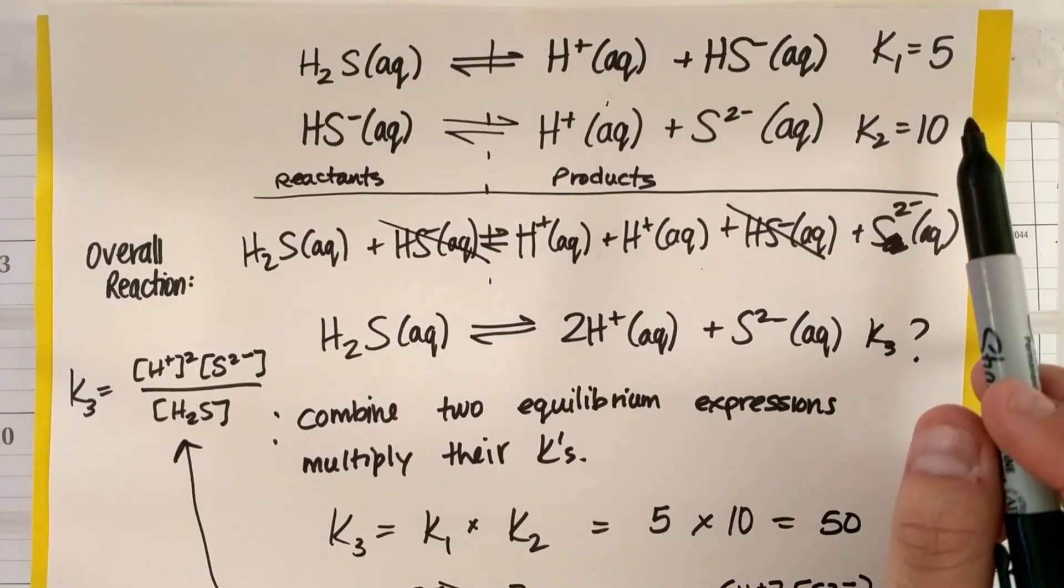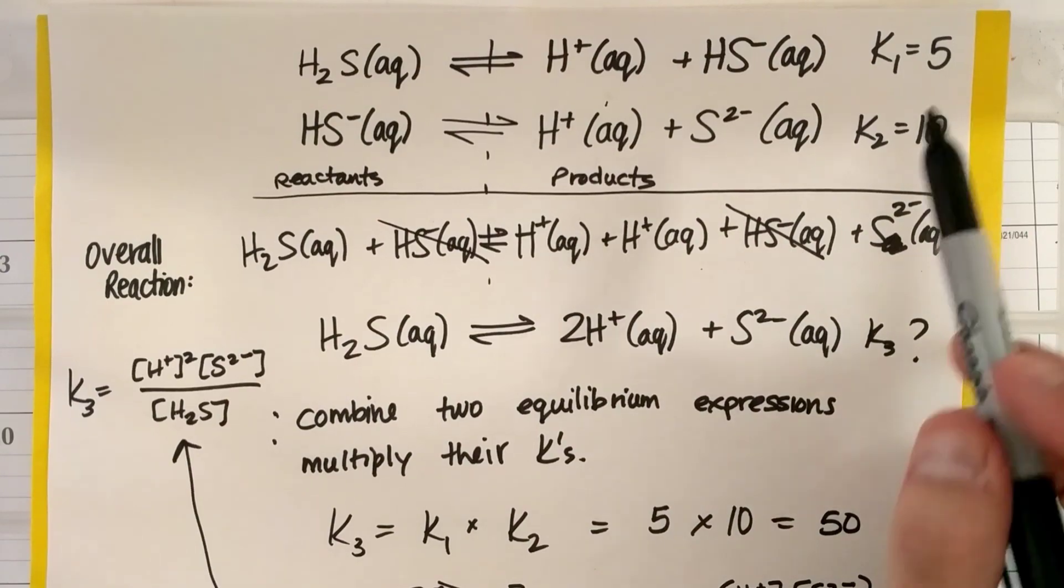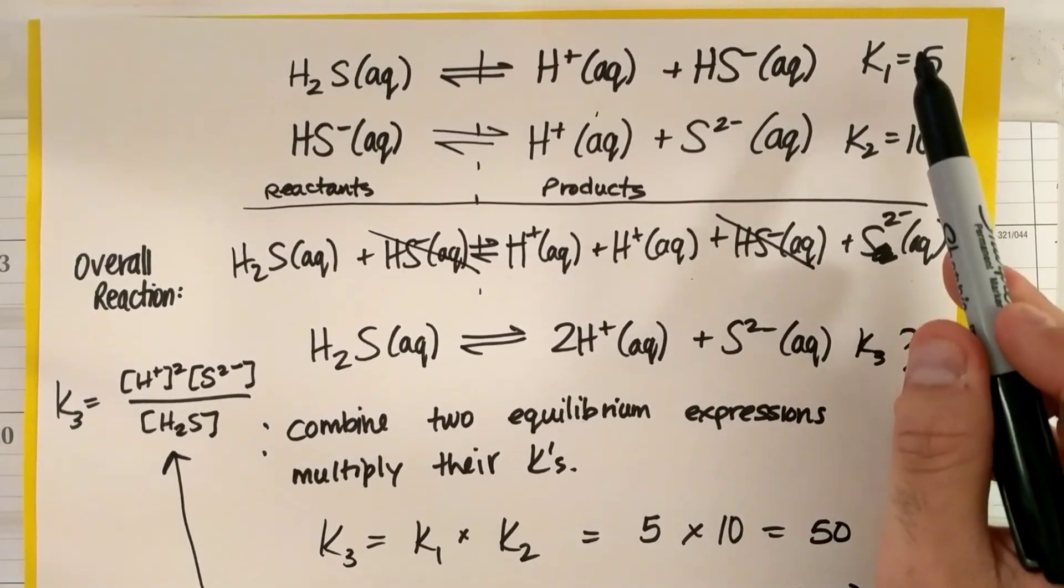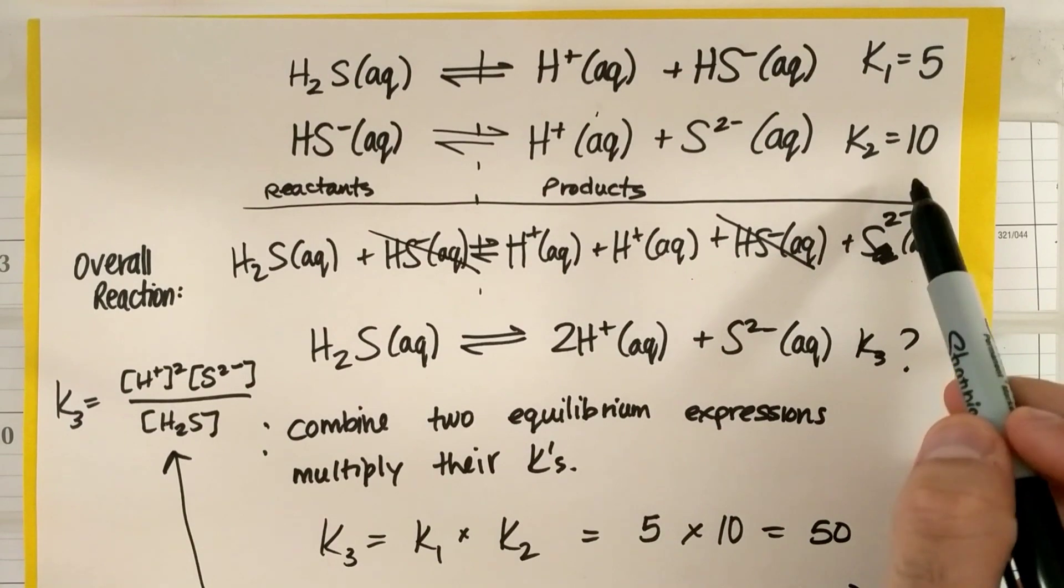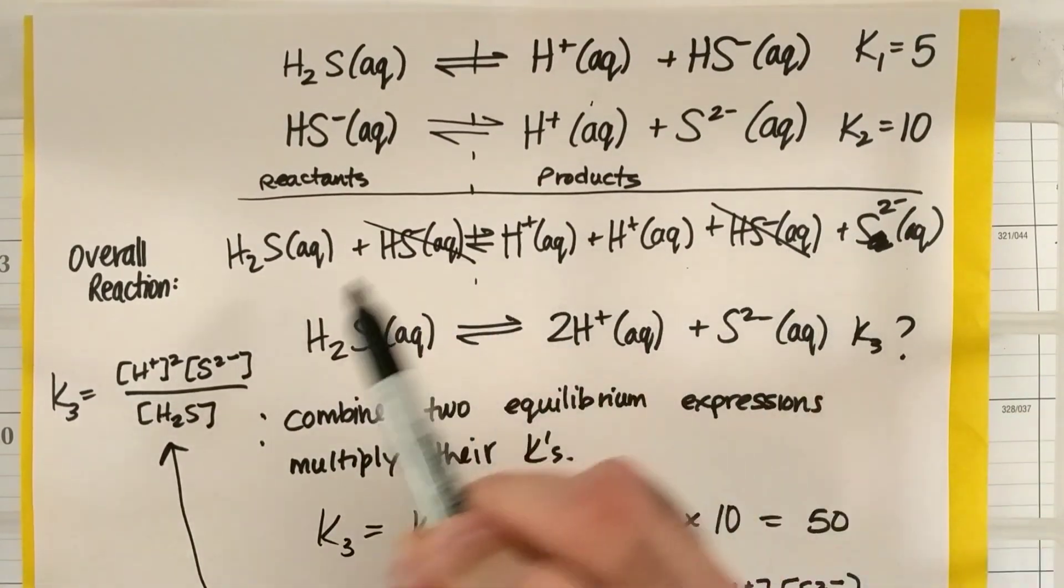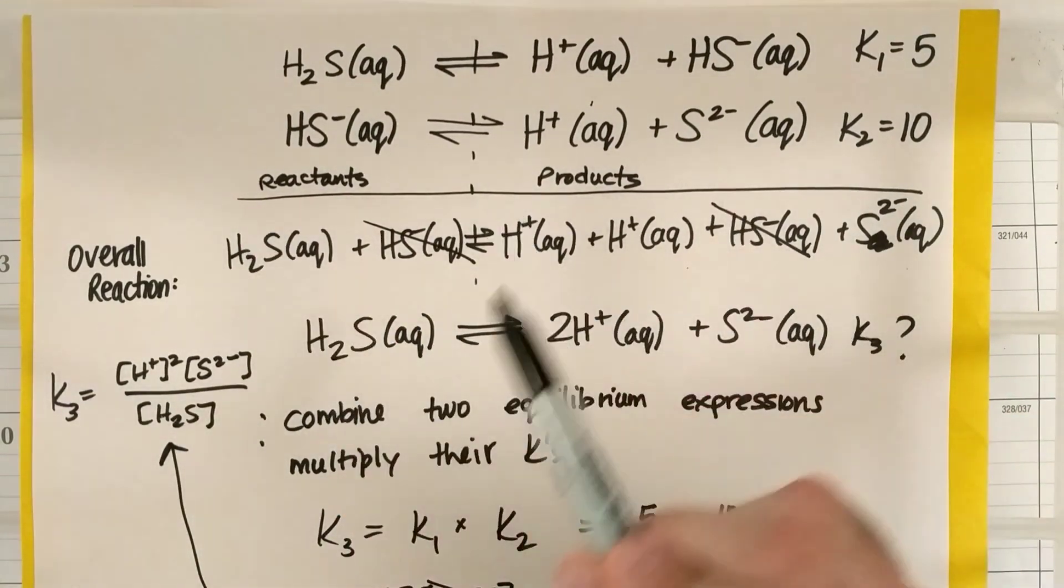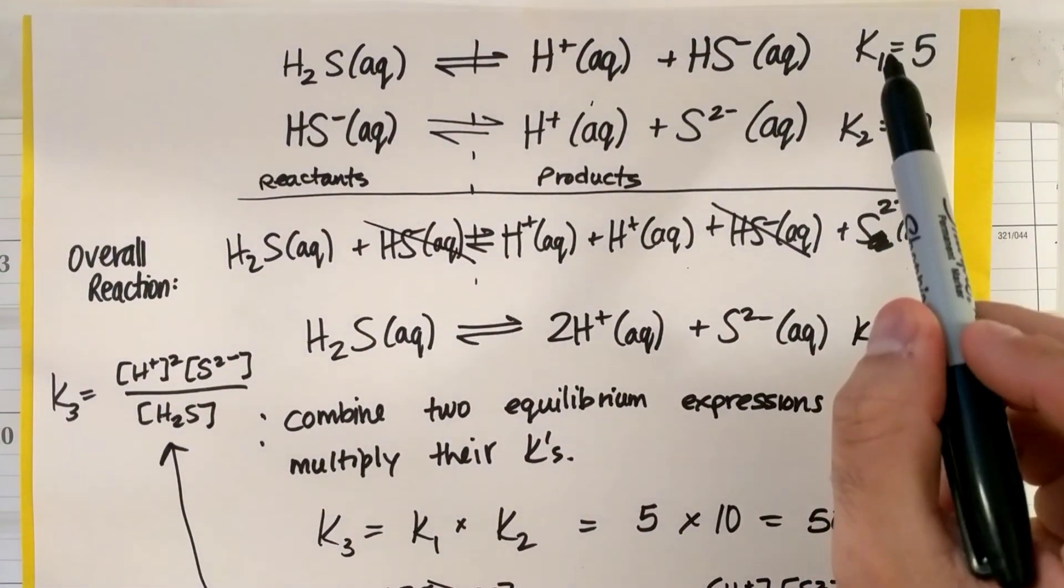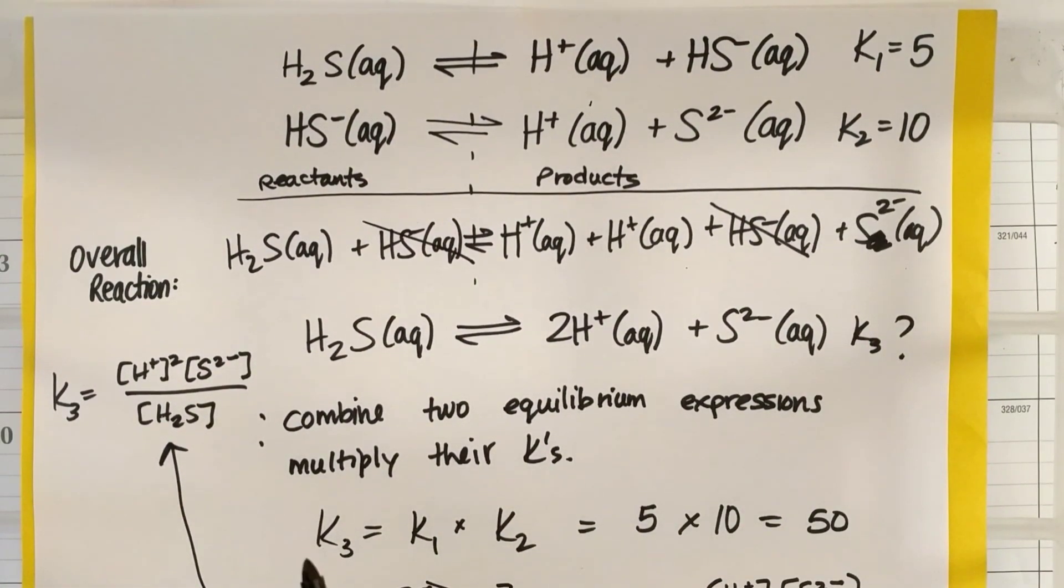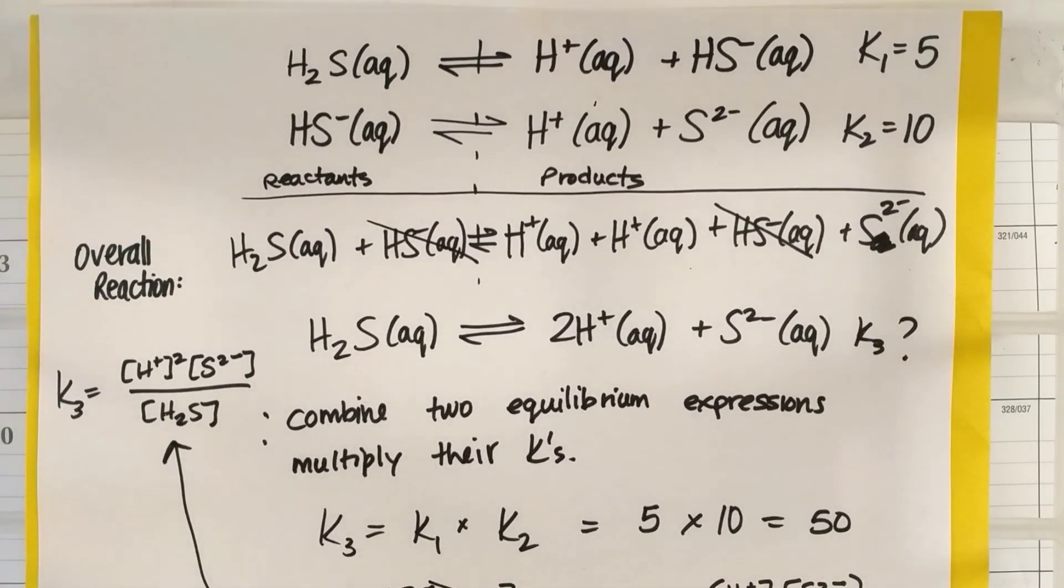So I just made up a number, K1 is five, K2 is 10. If I wanted to get this overall reaction for both these steps, my K3 would just be five times 10, or K1 times K2. Okay, so this was just a brief video on the third type of way to manipulate an equilibrium expression. So I'm hoping this was helpful and you have these examples in the future.